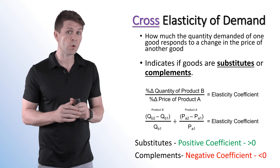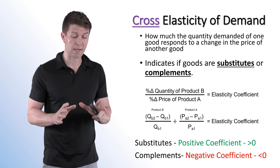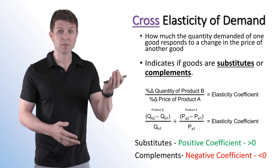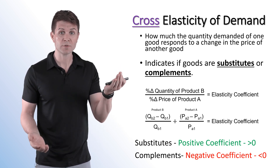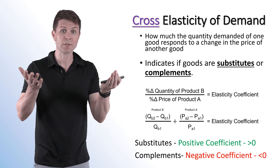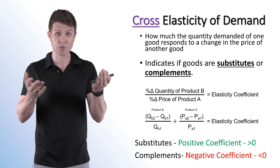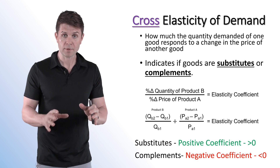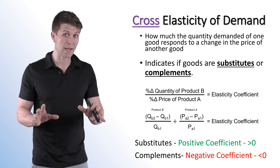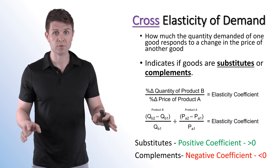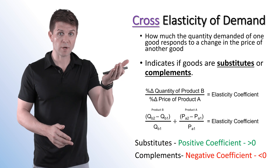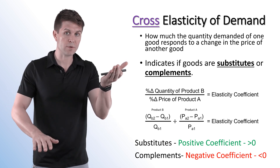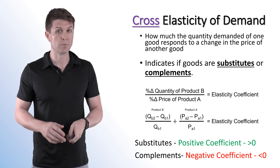If we have a positive coefficient, it means the two goods are substitutes — a price increase in one good results in a quantity demanded increase of the other good because we shift our purchases. If the coefficient is negative, that means they are complements. The price goes up for one good and quantity demanded goes down for the other, resulting in that negative coefficient.